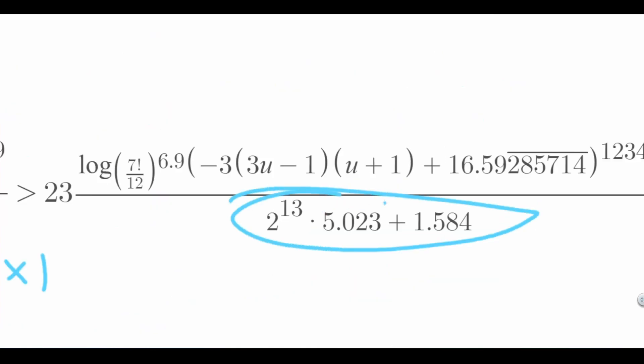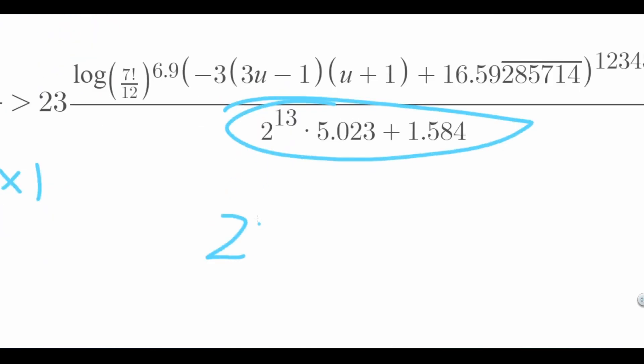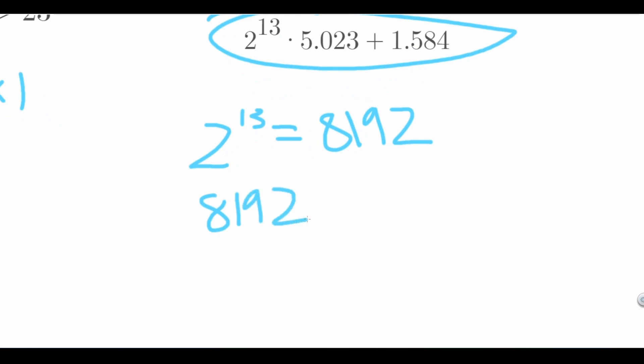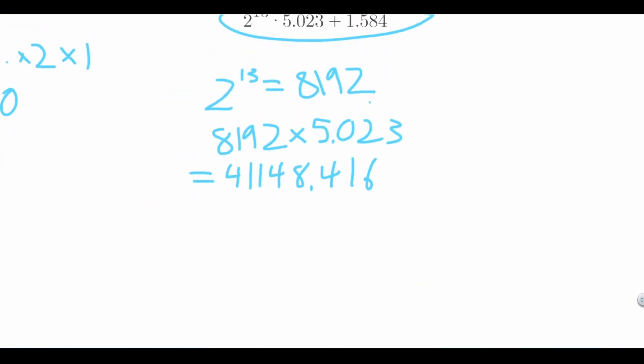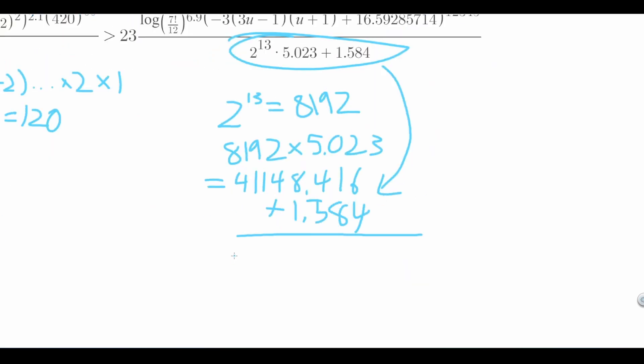Next, let's look at this. 2 to the power of 13 is the same thing as two times two times two, a total of 13 times, which is equal to 8,192. 8,192 times 5.043 is equal to 41,148.416, which means that the sum of these is 41,150.